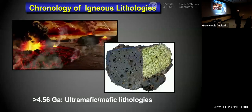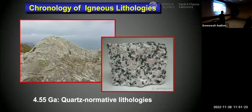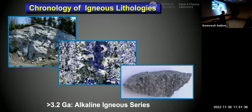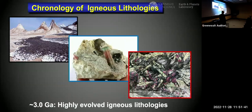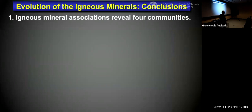The trend of four different communities with very strong associations within and strong antipathies outside is something we haven't seen before in discussions of igneous petrology. Looking at the chronology: the earliest igneous rocks on Earth were ultramafic and mafic; silica-bearing rocks from partial melting of basalt came within tens of millions of years; the earliest alkaline igneous series is only known from about 3.2 billion years; and the earliest complex pegmatites, carbonatites, and agpaitic pegmatites are all about 3 billion years old. But very strangely, there appear to have been no new igneous lithologies of any kind in the last 3 billion years.